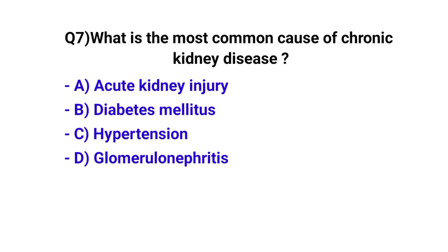Question number 7. What is the most common cause of chronic kidney disease? The correct option is B. Diabetes mellitus.